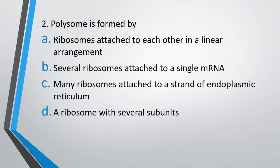Question number 2. Polysome is formed by ribosomes attached to each other in a linear arrangement, several ribosomes attached to a single mRNA, many ribosomes attached to a strand of endoplasmic reticulum, or a ribosome with several subunits. The correct answer is option B, by several ribosomes attached to a single mRNA.